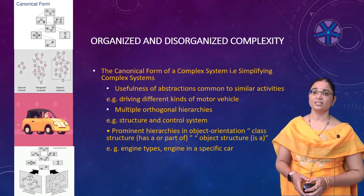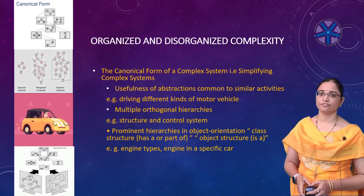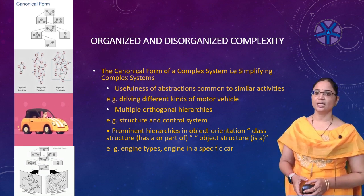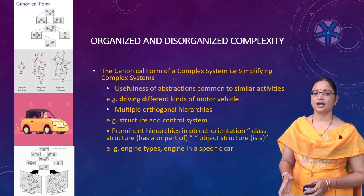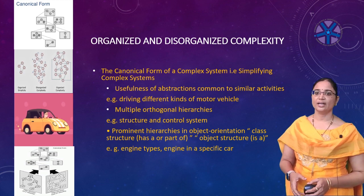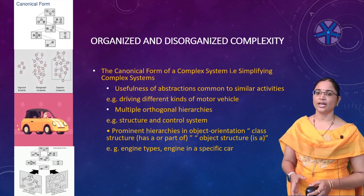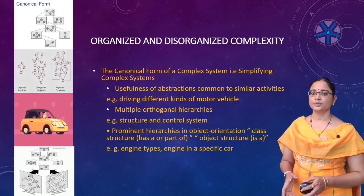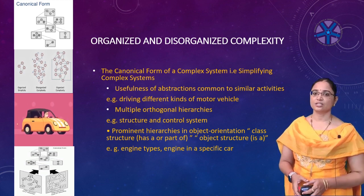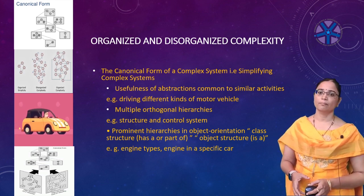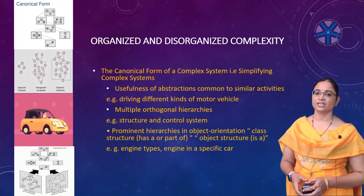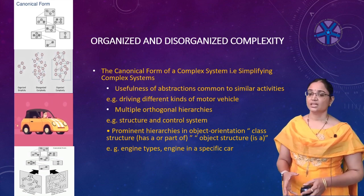A car is composed from wheels, a steering wheel, a chassis, and an engine. These two hierarchies are not entirely orthogonal, as objects are instances of certain classes. The relationship between the two hierarchies is shown by identifying the instance-of relationship as well.